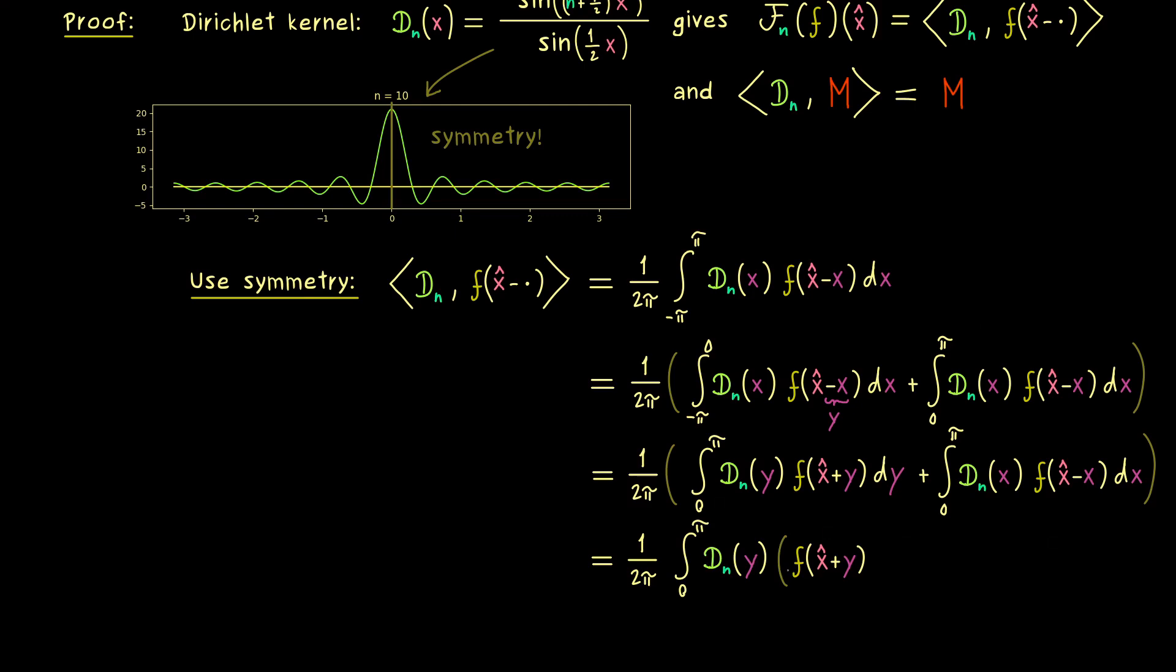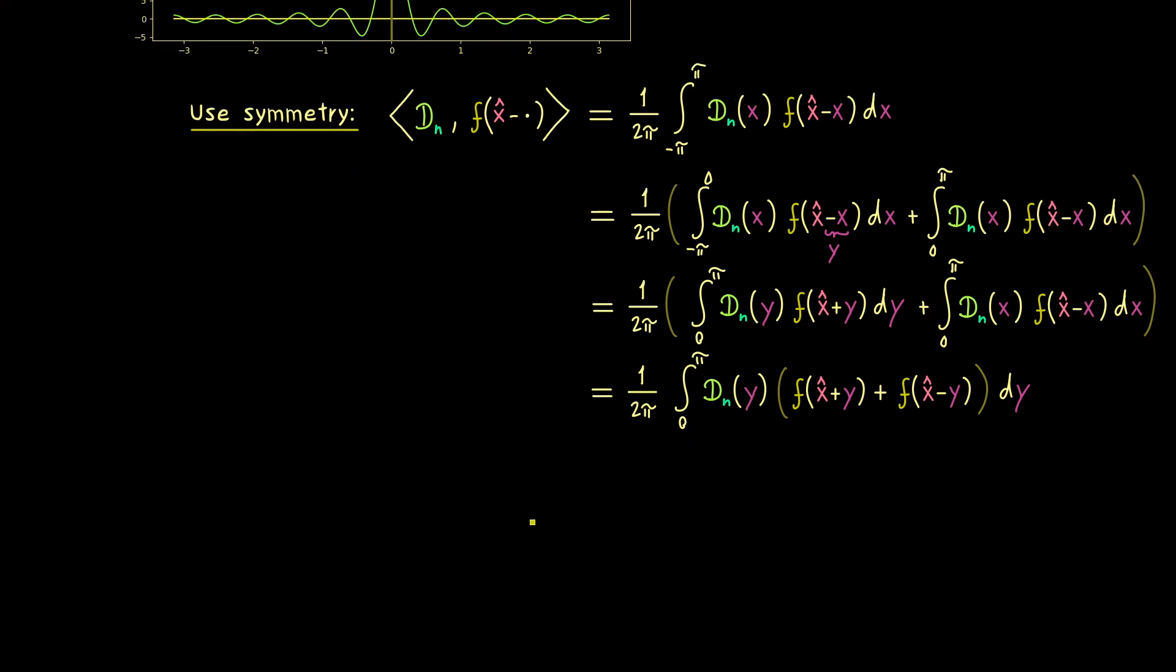And there inside we just have f of x hat plus y and f of x hat minus y. So you see the whole formulation is not shorter than our original but it makes everything simpler soon because we only have to integrate from zero to π here. This matters because as already mentioned the zero, the origin, is a zero of the denominator of the Dirichlet kernel. Hence now this special point is at the border of the integral so it does not make many problems.